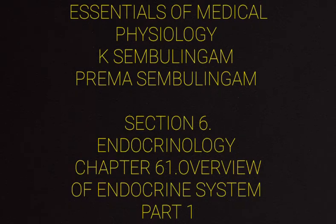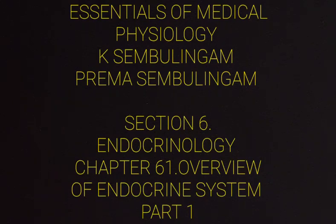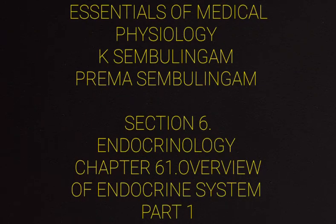Neurocrine or Neural Messengers are neurotransmitters and neurohormones. A neurotransmitter is an endogenous signaling molecule that carries information from one nerve cell to another nerve cell, muscle, or another tissue. Examples include acetylcholine and dopamine.